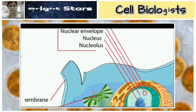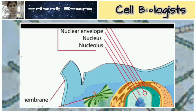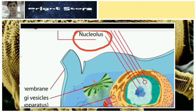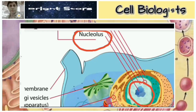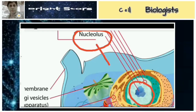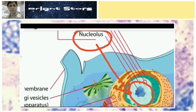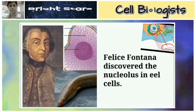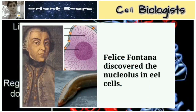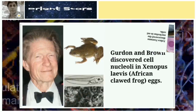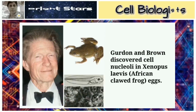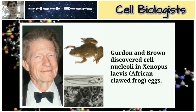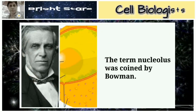At the center of the nucleus, a spherical structure called the nucleolus is present. Felice Fontana discovered the nucleolus in eel cells. Gurdon and Brown discovered cell nucleoli in Xenopus laevis, the African clawed frog. The term 'nucleolus' was coined by Bowman.